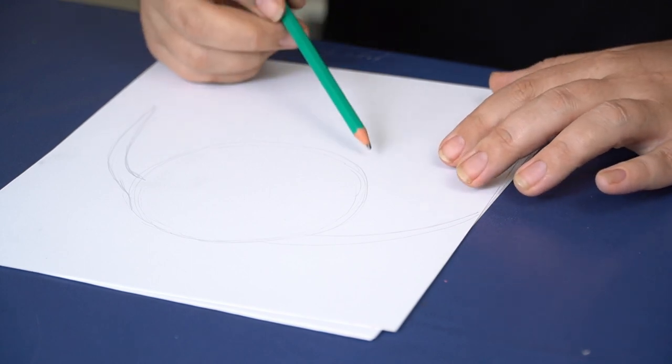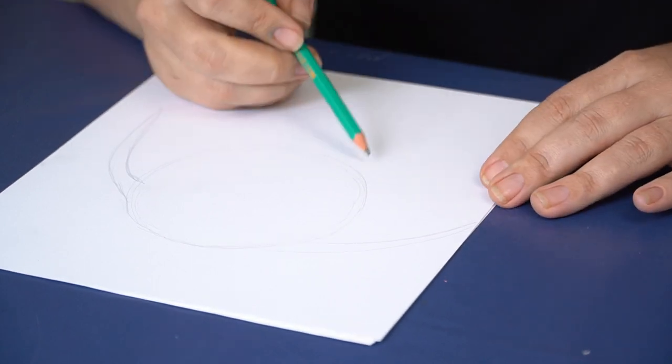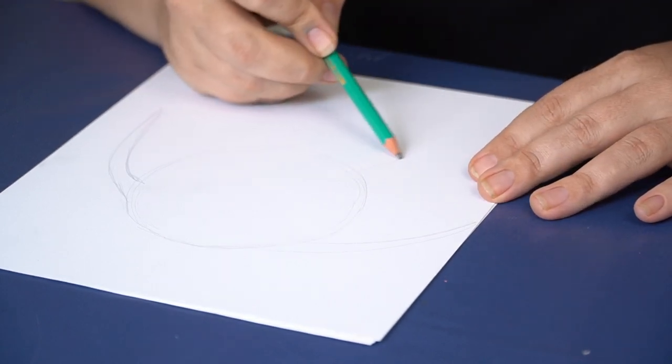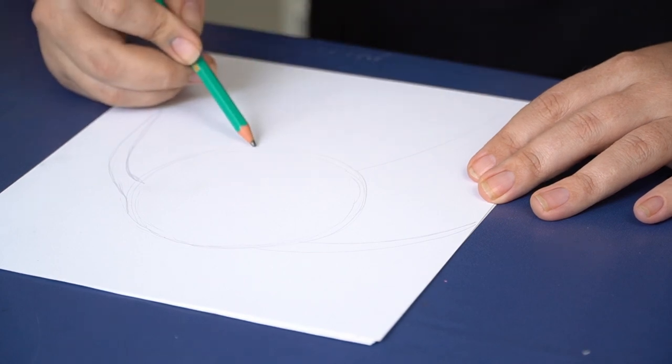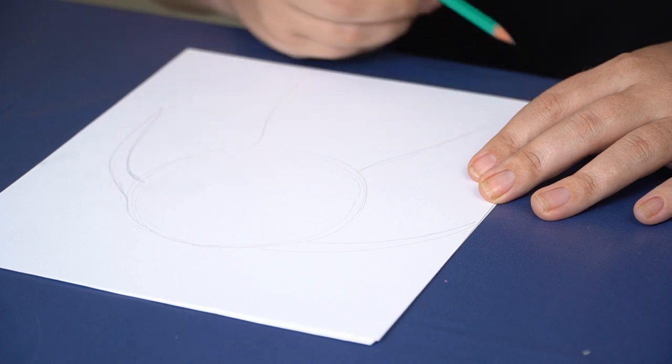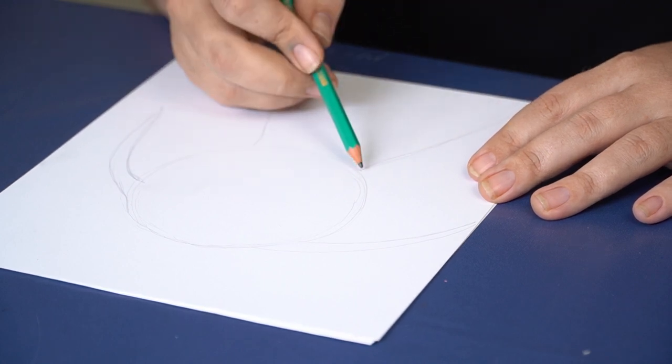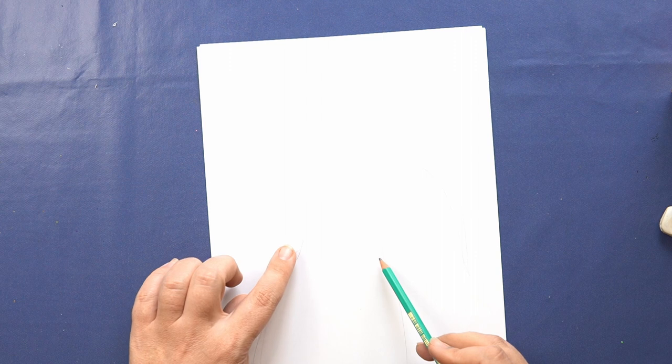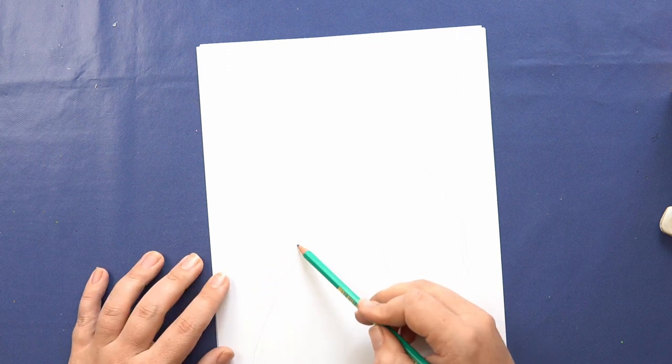Before we draw the rest of the ears we're just going to draw the elephant's body in. For the body we're just going to draw two simple lines coming down. I'm giving mine a bit of a curve so kind of an S shape. So it's a bit skinnier at the top and it gets wider as it goes out.